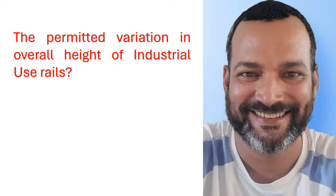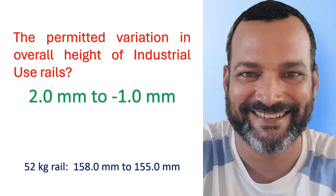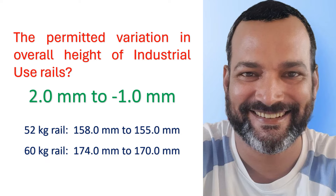The permitted variation in overall height of industrial use rail is +2.0 millimeter to -1.0 millimeter. For example, for the 52 kg rail it will be 158.0 mm to 155.0 mm, and for 60 kg rail it will be 174.0 mm to 171.0 mm.